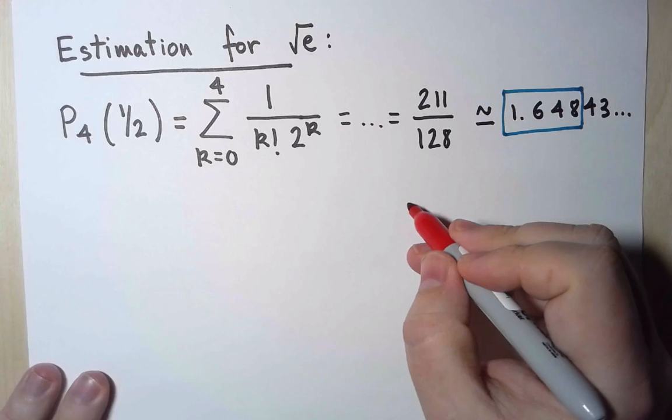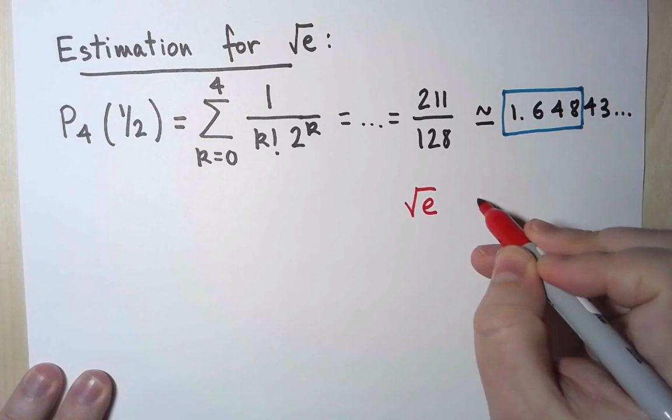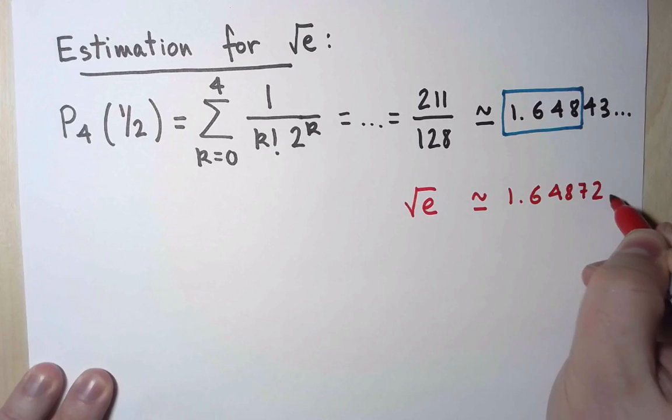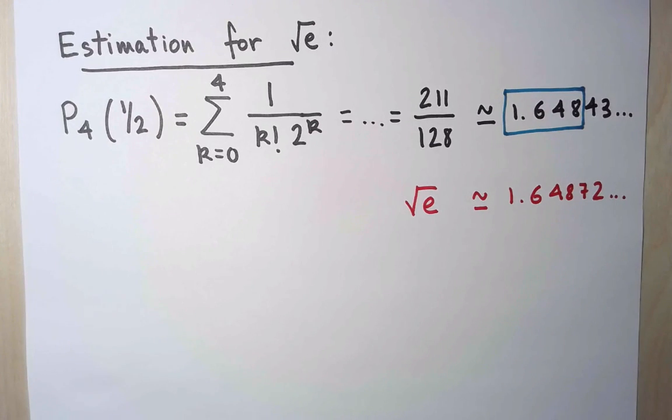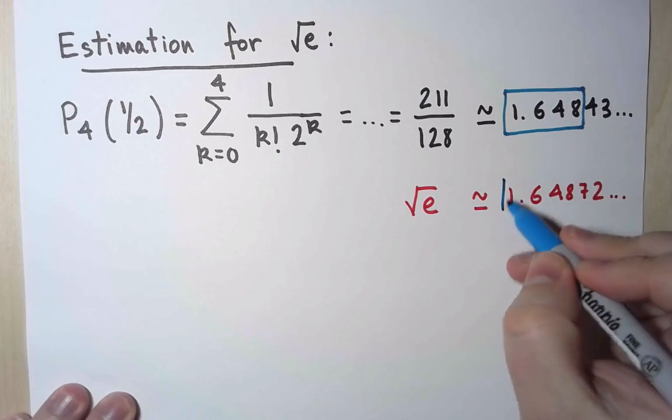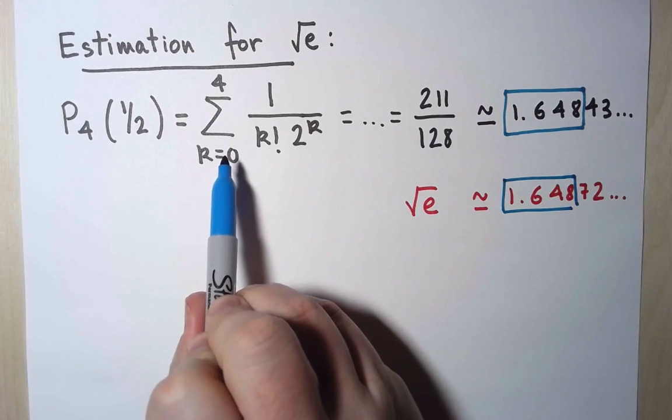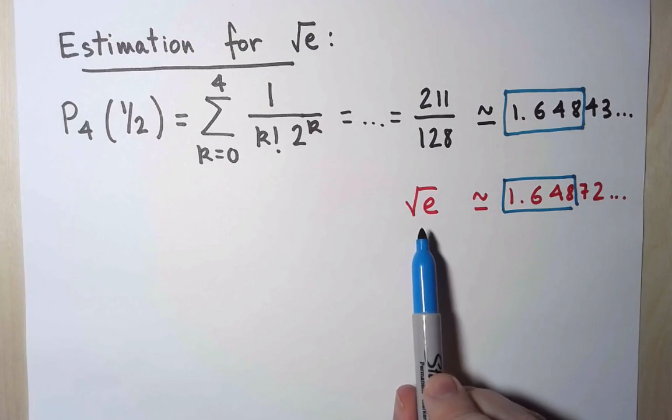And indeed, that is the case. The first few digits of the exact value of root e are 1.64872. So we got the precision that we wanted. It was just a very simple sum of five numbers, gave me an estimation for root e with an error smaller than 0.001.